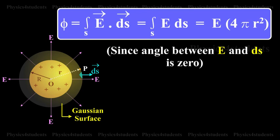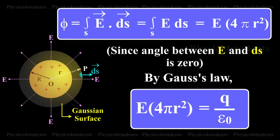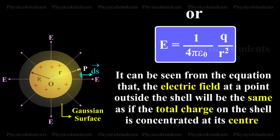Since angle between E and ds is zero, by Gauss's law, E times 4πr² equals q by ε₀, or E equals 1 by 4πε₀ times q by r².